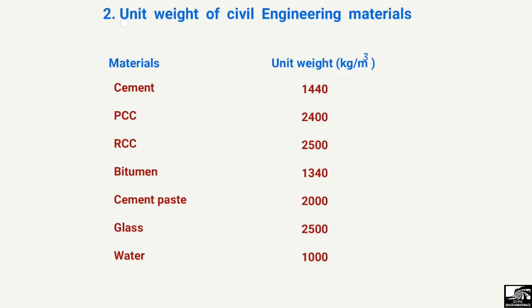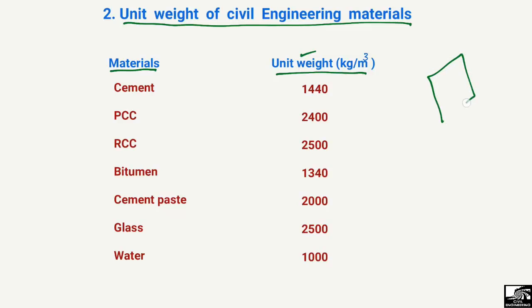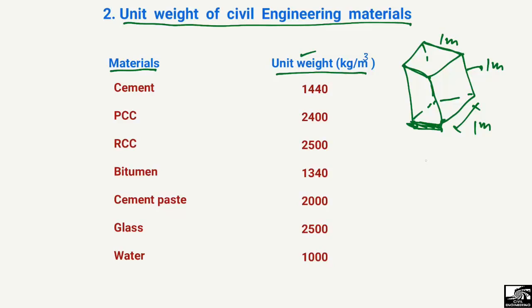The second part covers the main unit weights of civil engineering materials. We have different materials listed with their unit weights in kilograms per cubic meter. Unit weight means: if we consider a cube with a height, base, and length all of 1 meter — giving a volume of 1 cubic meter — unit weight tells us how much kilogram of material fits inside that cube.